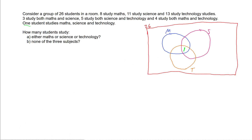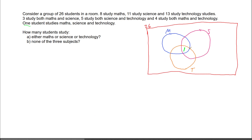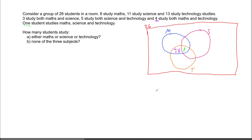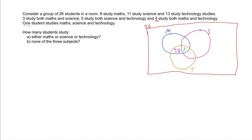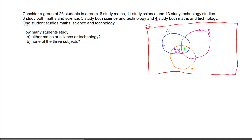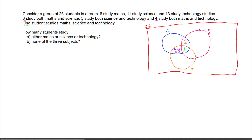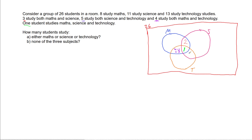Then we can move on to the overlaps. For the overlap between the technology circle and the math circle — how many study maths and tech? We have four that study maths and technology, but I've already accounted for one of them that also studies science. So four minus one gives three in this section. For the maths and science overlap, we have three students, minus the one already counted, leaving two. And for technology and science, we've got five students minus the one already counted, leaving four.